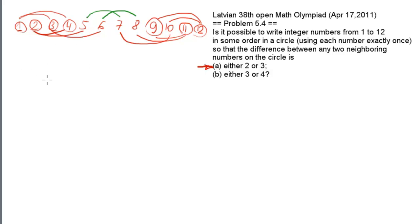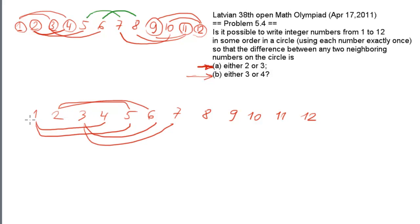Now you can write them in a big circle following these lines. I leave it as an exercise. Let's consider another case: what happens if the difference should be either 3 or 4. I can also build the same line and I also connect those which have their neighbors. So in this case, number 1 can only have neighbors 4 and 5. Number 2 can have neighbors 5 and 6. Number 3 can only have neighbors 6 and 7.